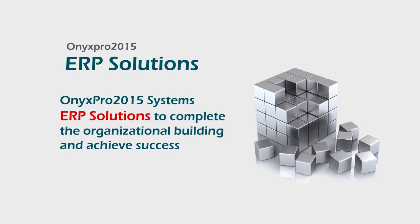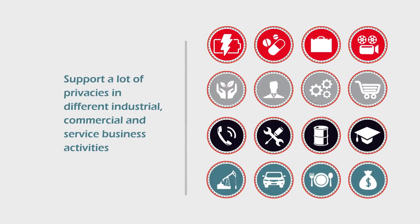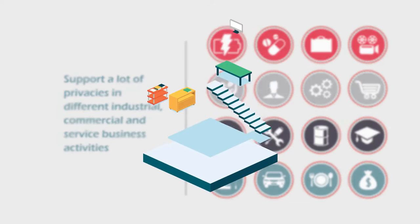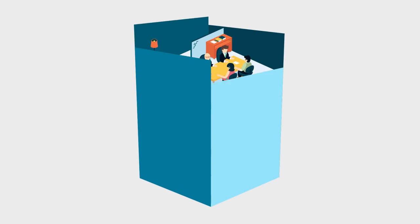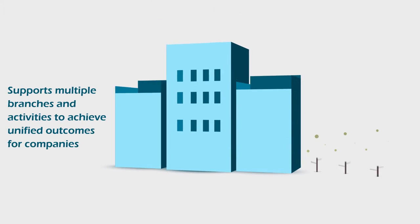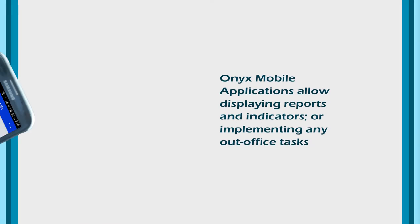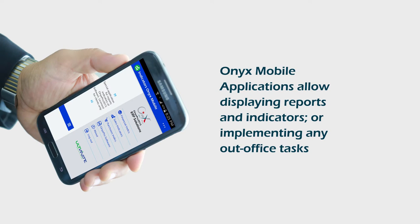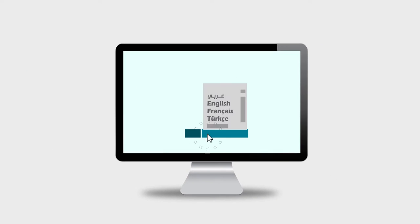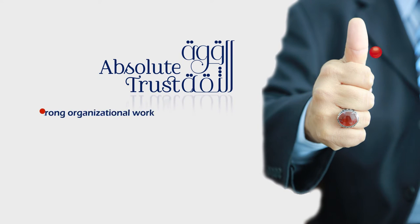Onyx April 2015 ERP solutions achieve organizational and administrative organization in enterprises looking for success in all industrial, commercial, and service sectors — with multiple sectors, projects, activities, and branches — as well as organizations that want to achieve unified outcomes. Onyx performance is monitored via Onyx mobile indicators regardless of the user's language, with absolute trust in Onyx Pro integrated systems.